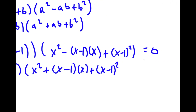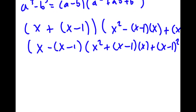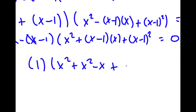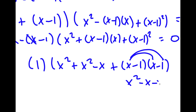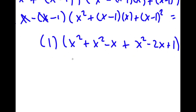These two are actually separate equations, so this is equal to 0 and this is equal to 0. Starting with the first factor: x minus x minus 1 simplifies — the x's cancel — leaving positive 1. So we have 1 times x squared plus x squared minus x plus x minus 1 squared, which is x squared minus 2x plus 1, giving 3x squared minus 3x plus 1 is equal to 0.